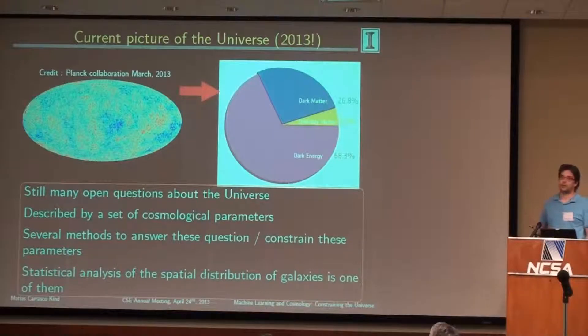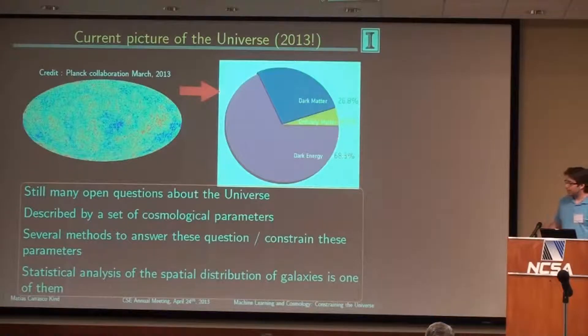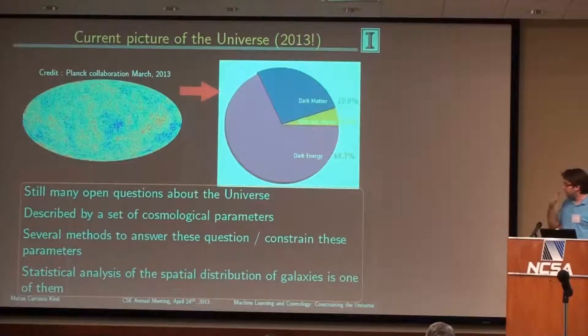For example: what is dark matter, what is dark energy, and what is the acceleration rate of the universe, which is measured through the Hubble constant?